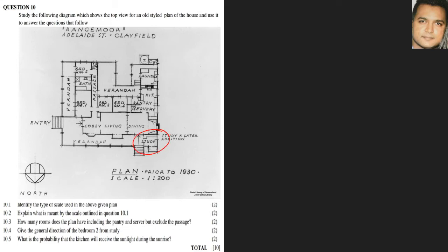Question 10.4 asks for the general direction of bedroom two from the study. Let's locate these two places — the study is here and bedroom two is right there. It's important to look at the cardinal points: our arrow faces down, which means north is facing down, south is at the top, west is here, and east is here.